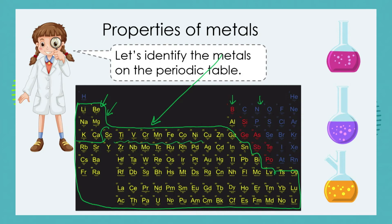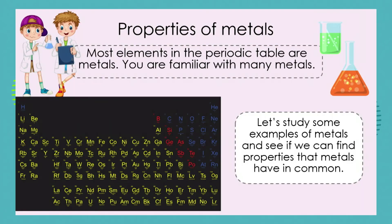Some of these in the top row are also very interesting. Now most elements in the periodic table are metals and I think you're familiar with many metals. What we're going to do is study some examples of metals and see if we can give names to the properties that metals have in common.